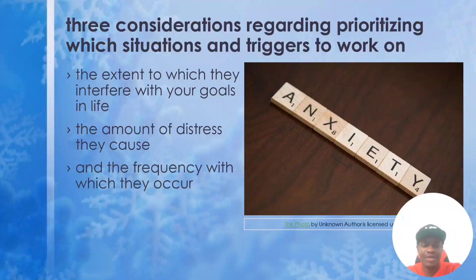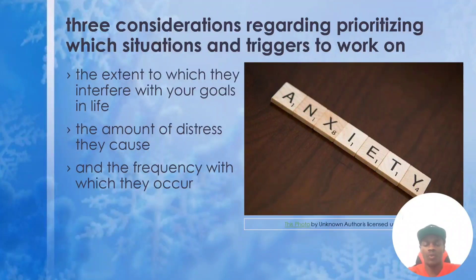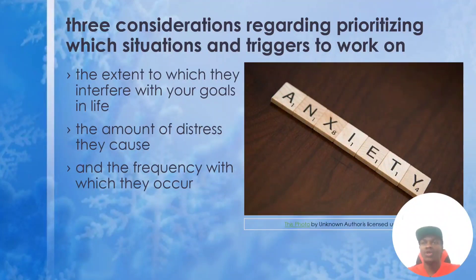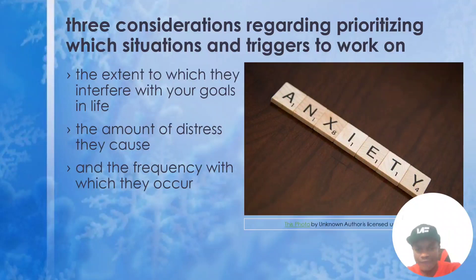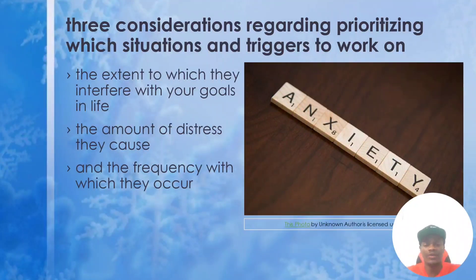The next consideration is the amount of distress they cause you — the frequency we talked about. How intense does it come when it comes? How often does it occur? What's the intensity of the distress? These three things — interference with life goals, intensity, and frequency — should be your guidance in terms of deciding which anxious pattern to start working on first.